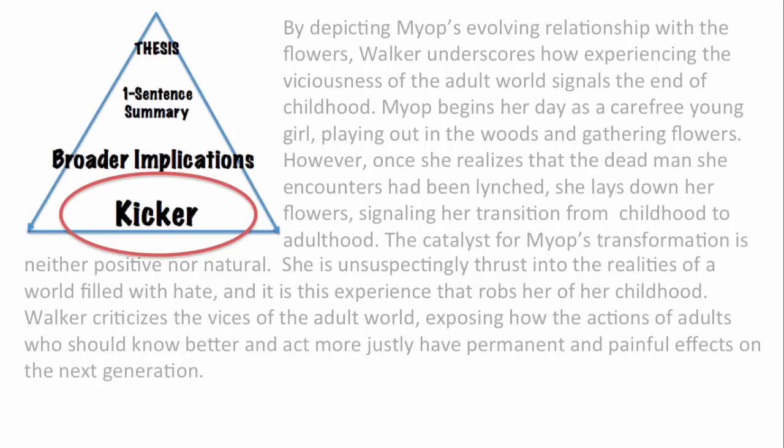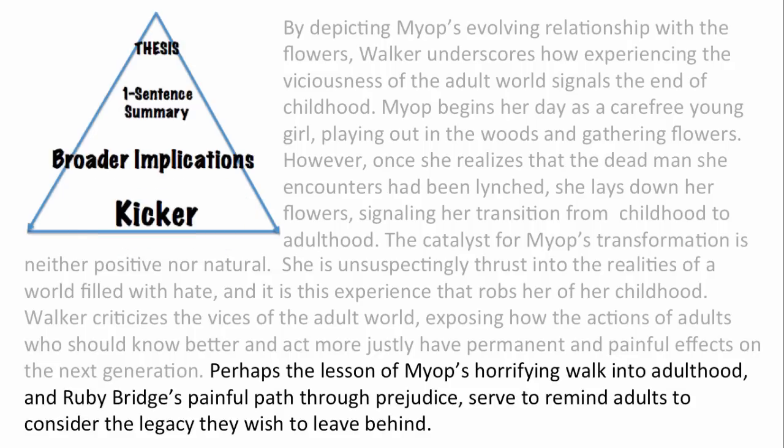Finally, I know I need to leave the reader thinking, and ideally I'll weave back my hook when I write my kicker. So Ruby Bridges certainly had to learn this life lesson the hard way — I bet we could tie back to her in the kicker. So here we have it: "Perhaps the lesson of Myop's horrifying walk into adulthood and Ruby Bridges' painful path through prejudice serve to remind adults to consider the legacy they wish to leave behind." Alright, I hope that's helpful. That's a quick overview of conclusions — don't forget to consult the primer for more help.